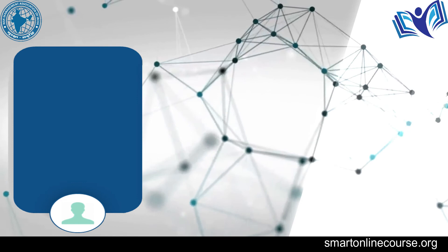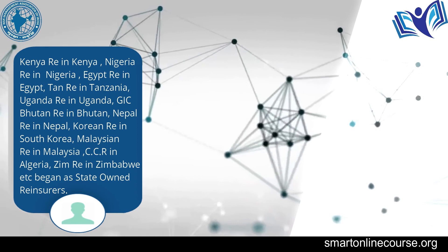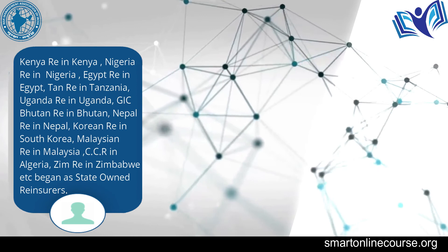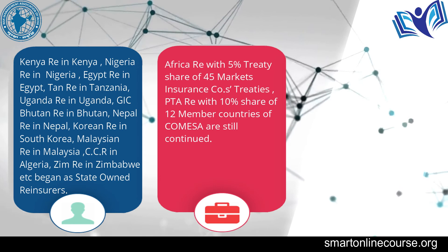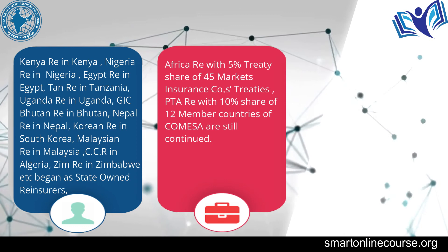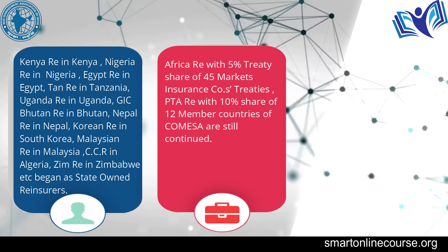As mentioned, Kenya Re, Nigeria Re, Egypt Re, GIC, Bhutan Re, Nepal Re (started only 3–4 years back), and Malaysia Re are among these companies. Regional reinsurance companies also came up in Africa. Africa Re was formed by governments of 45 countries in Africa, and all 45 countries had to give 5% of their reinsurance business to Africa Re. Africa Re started with its head office in Lagos and is today the biggest and most established reinsurer in Africa.